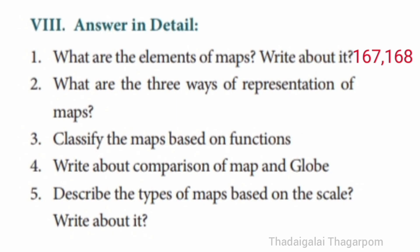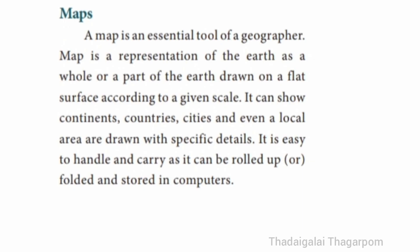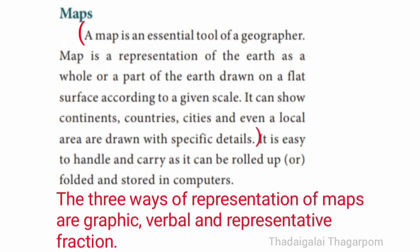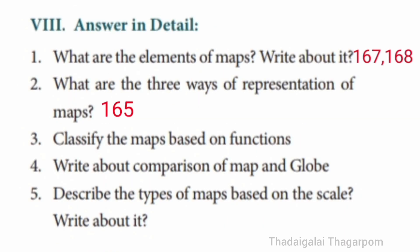Question 2 – What are the three ways of representation of maps? Answer in page 165. A map is an essential tool of a geographer – a representation of the earth drawn on a flat surface according to a given scale. The three ways of representation of maps are graphic, verbal and representative fraction.